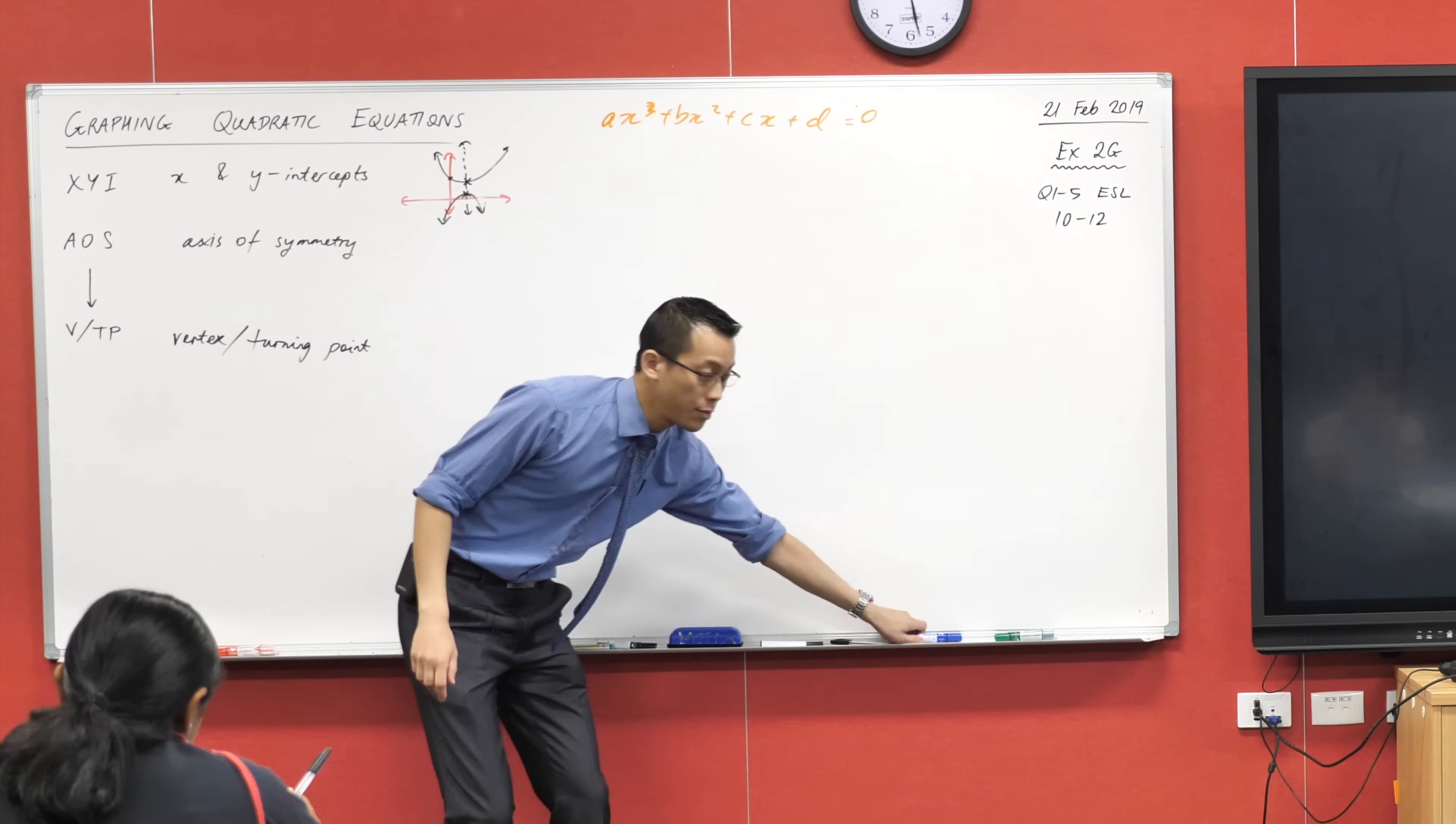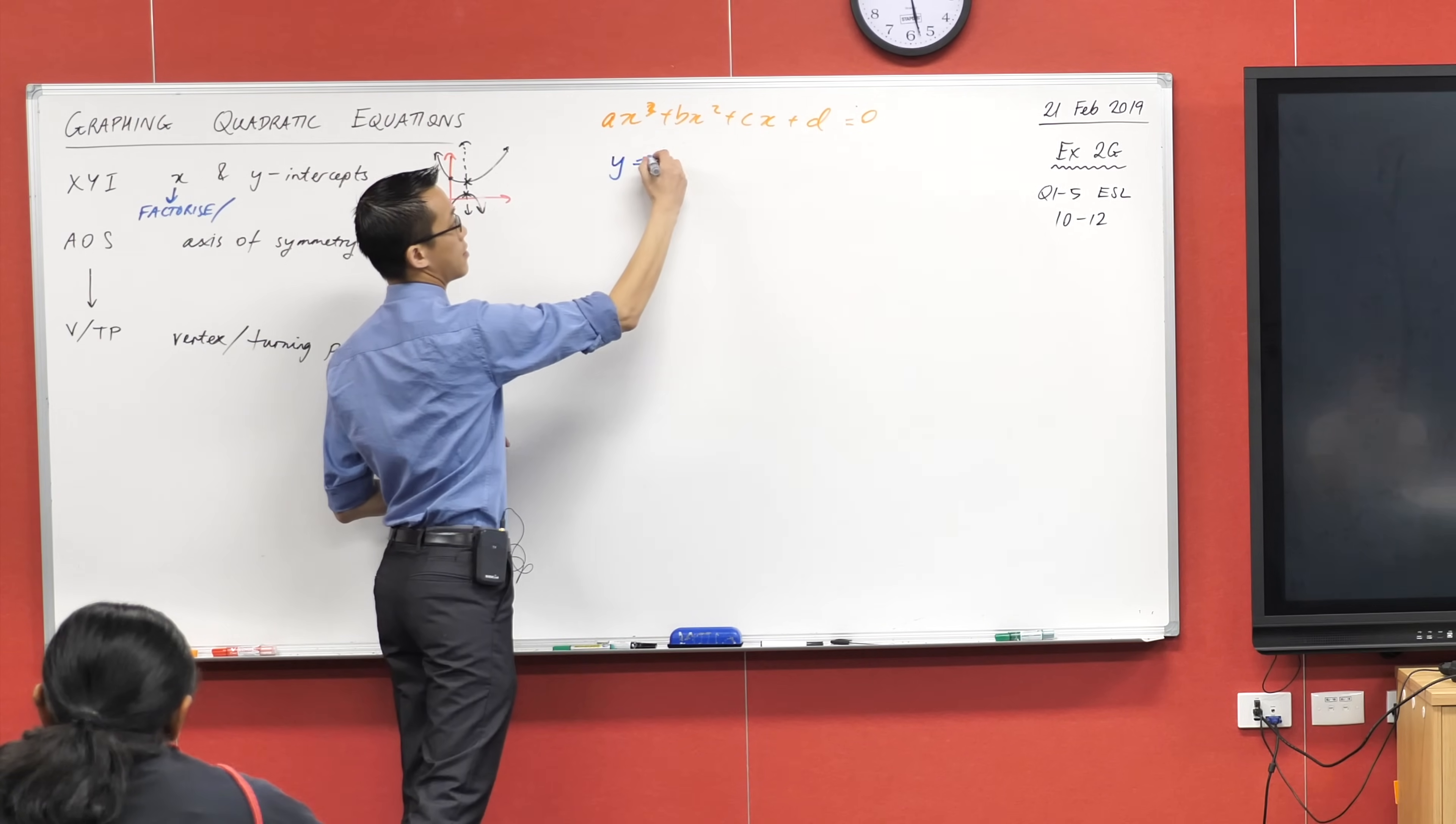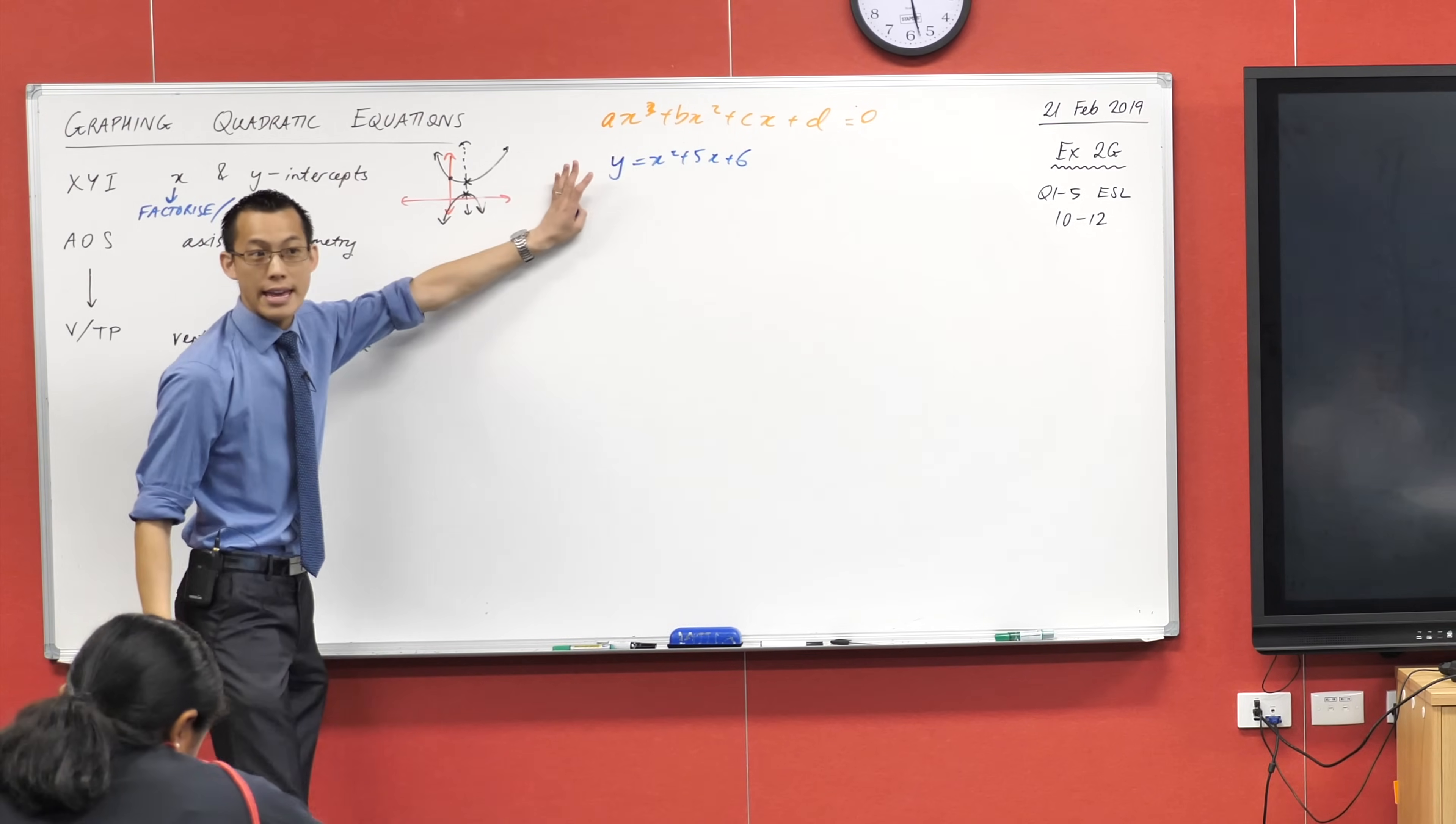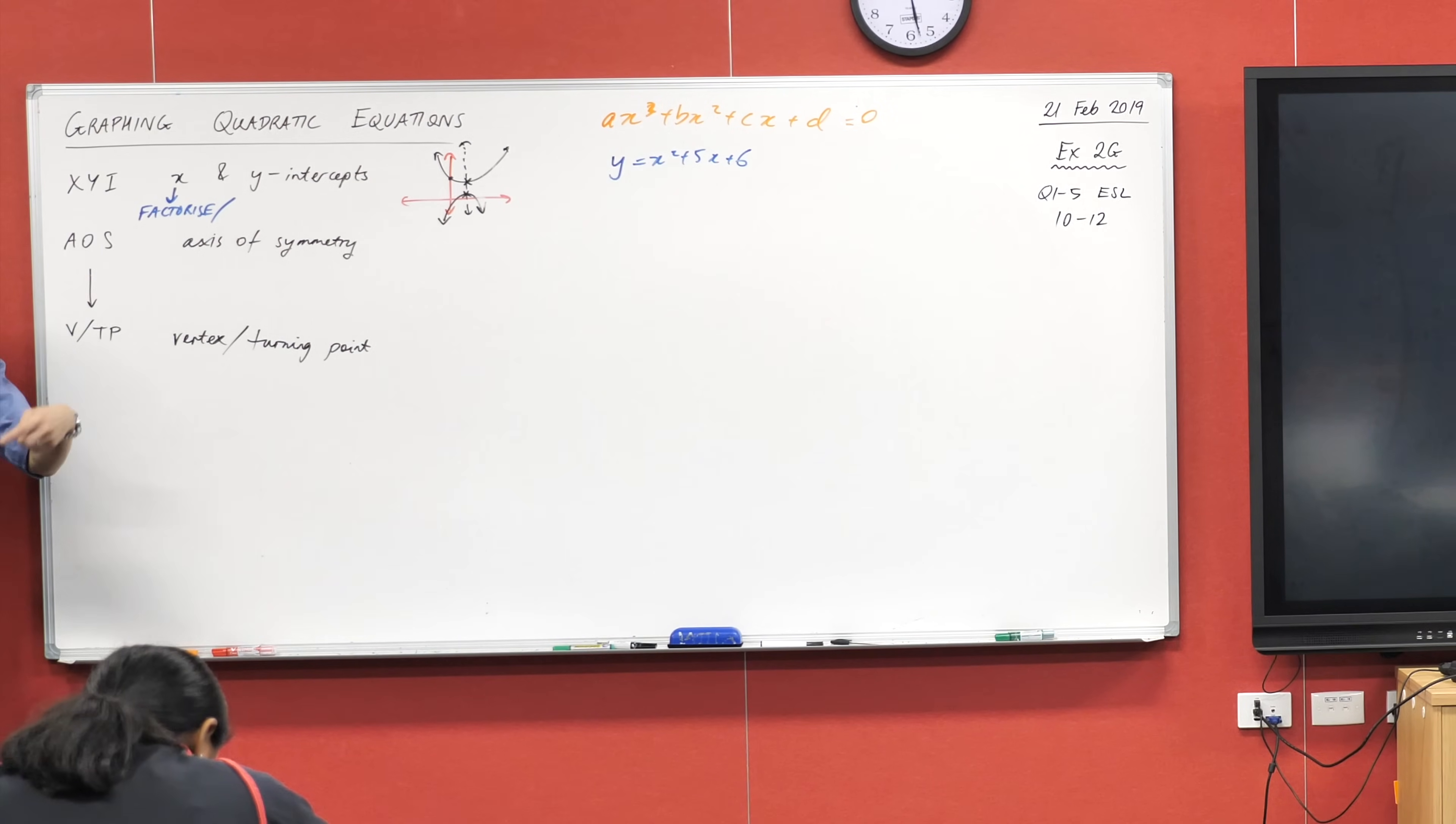For starters, this will be the color that I use. We already established with the x-intercepts, you've got some choices, don't you? You could factorize, or you could, what other methods do we have? Once we make y equals zero, though, for example, if I had this. Once we make y equals zero, we then need to factorize, don't we? And then we can just read off the roots.